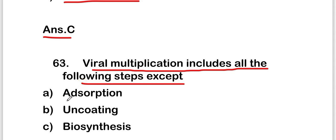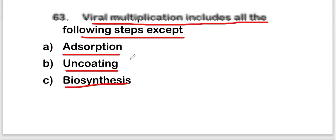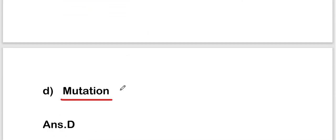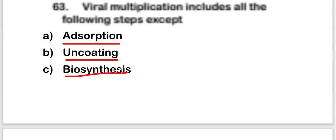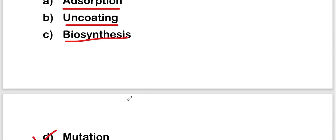The next question is: viral multiplication includes all the following steps except — adsorption, uncoating, biosynthesis, or mutation. The right answer is option D — mutation. Viral multiplication includes all these steps except mutation.